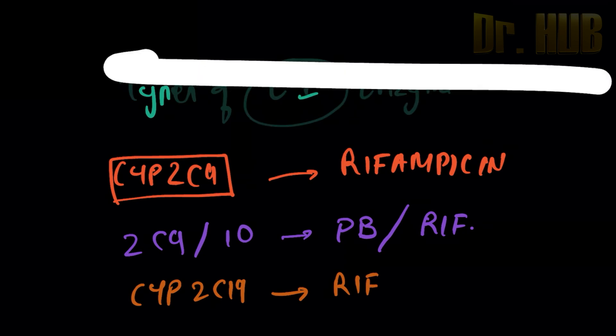Then lastly we look at the CYP 3A4 or 5. So this inducer is nothing but the rifampin and also the carbamazepine.